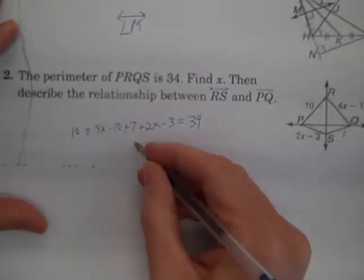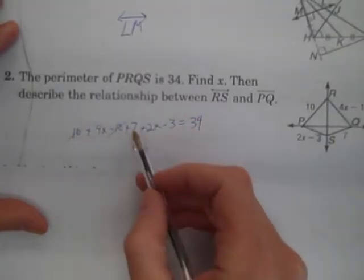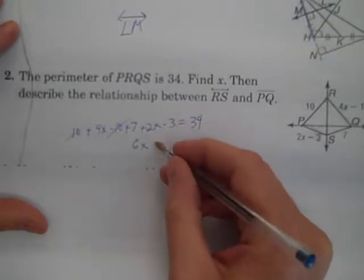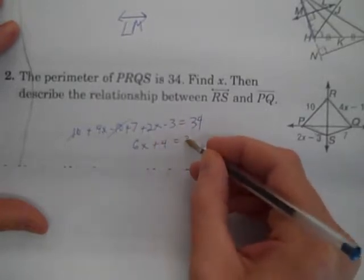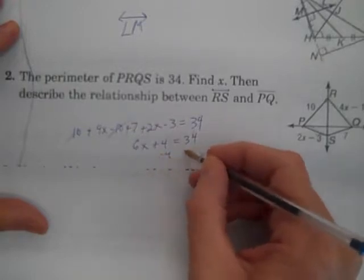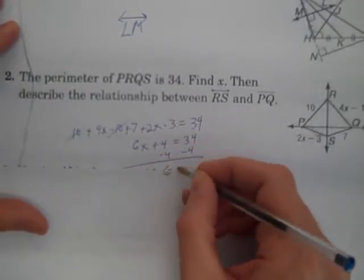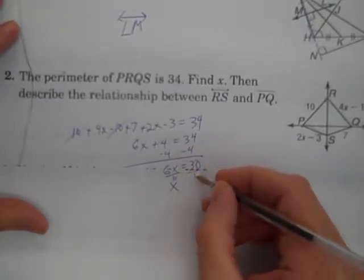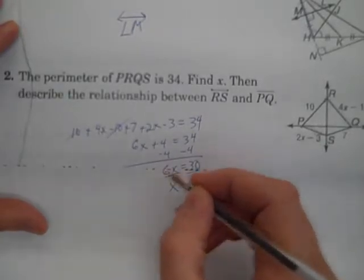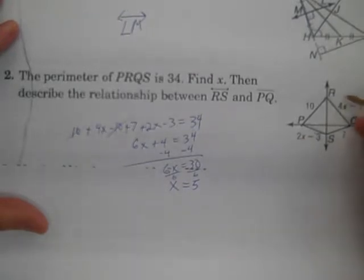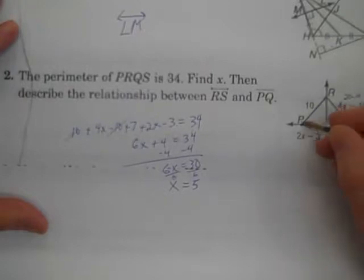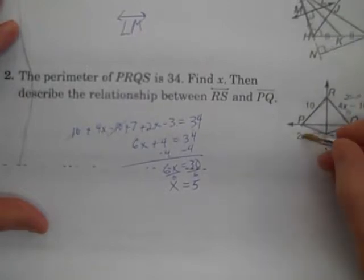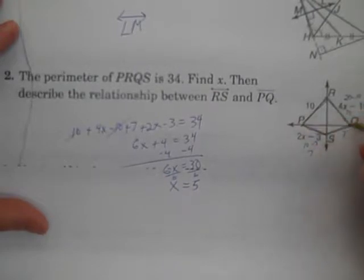4X and 2X is 6X. 10 minus 10 is 0. 7 minus 3, that is 4. 6X equals 34. 6X is 30. And X would be 5 then. 4 times 5 is 20. 20 minus 10 is 10, which is the same distance here and here. 2 times 5 is 10. 10 minus 3 is 7. That makes these two the same distance.